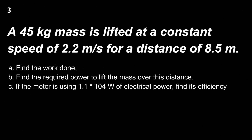Now let's look at a calculation question: Question 3. A 45 kg mass is lifted at a constant speed of 2.2 meters per second for a distance of 8.5 meters. Part A: find the work done. Part B: find the required power to lift the mass over this distance. Part C: if the motor is using 1.1 × 10⁴ watts of electrical power, find its efficiency.